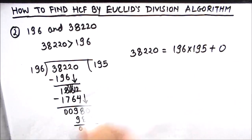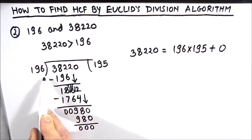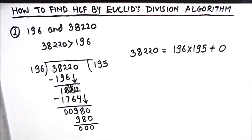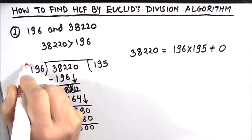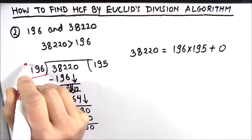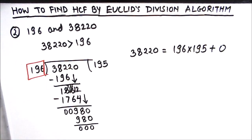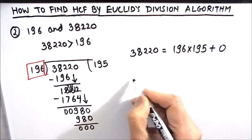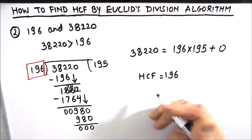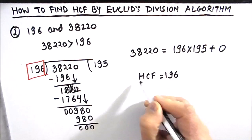The divisor by which we get remainder 0 is the HCF of the two numbers. So the HCF of 38,220 and 196 is 196.